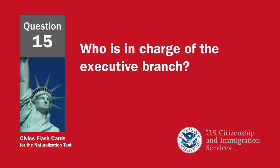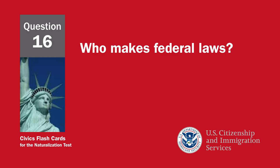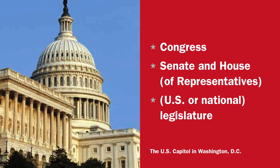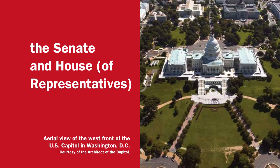Who is in charge of the executive branch? The president. Who makes federal laws? Congress — the Senate and House of Representatives, also called the U.S. or National Legislature. What are the two parts of the U.S. Congress? The Senate and House of Representatives.